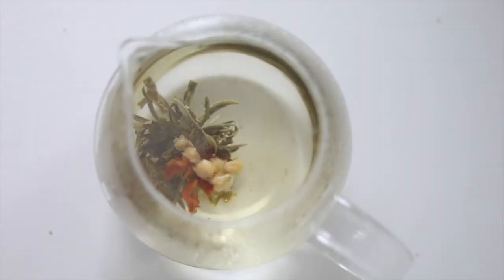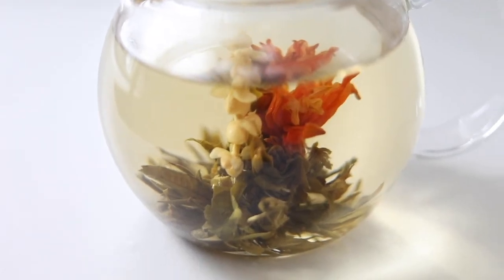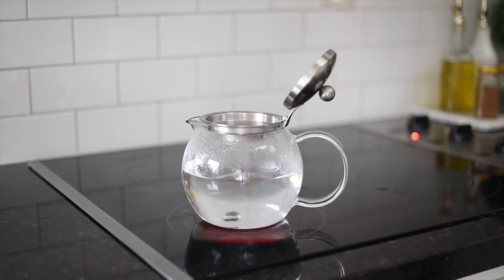Second, place a blooming tea inside, pour in water that's at least three to four inches deep, and watch it bloom into a gorgeous flower.